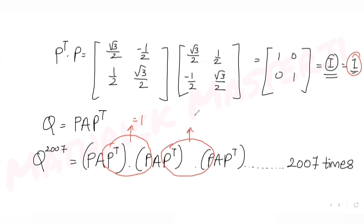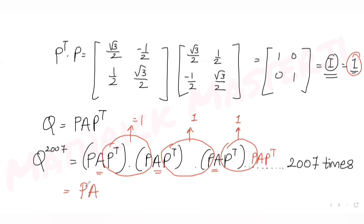After cancellation, all the Pᵀ·P products become identity (equal to 1), leaving only A multiplied 2007 times. The result is Q^2007 = P·A^2007·Pᵀ, with the leading P and trailing Pᵀ remaining as-is.